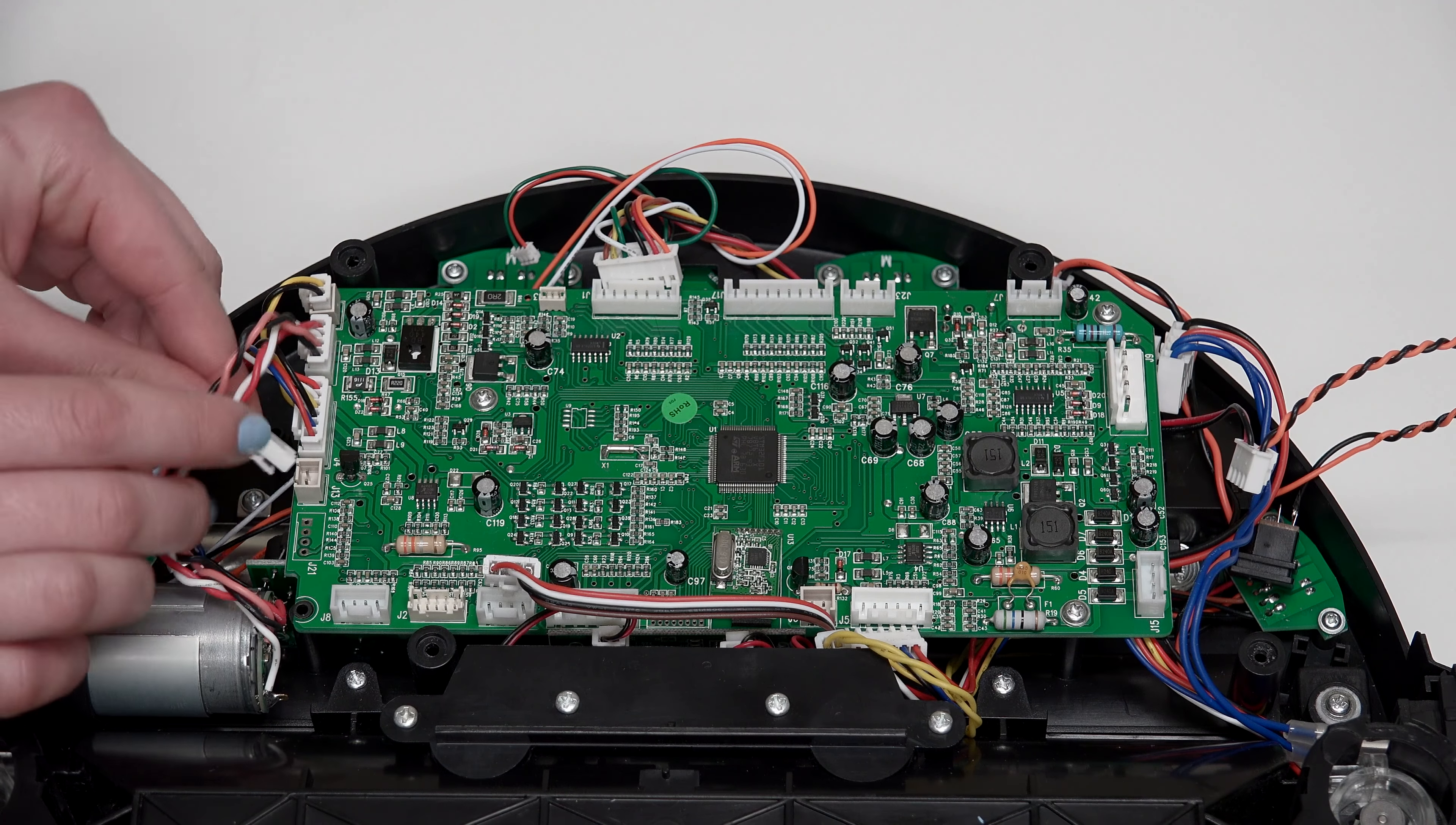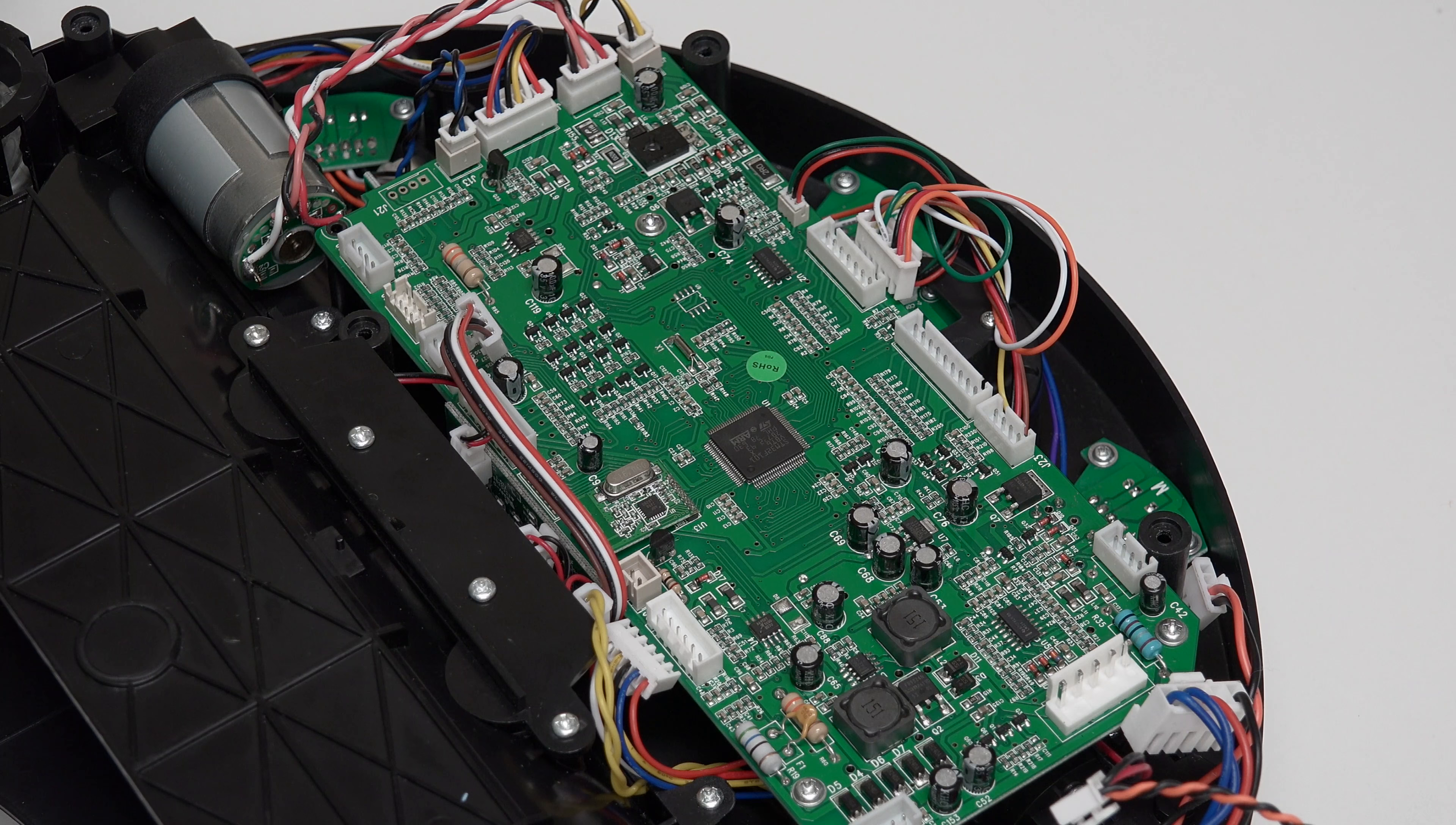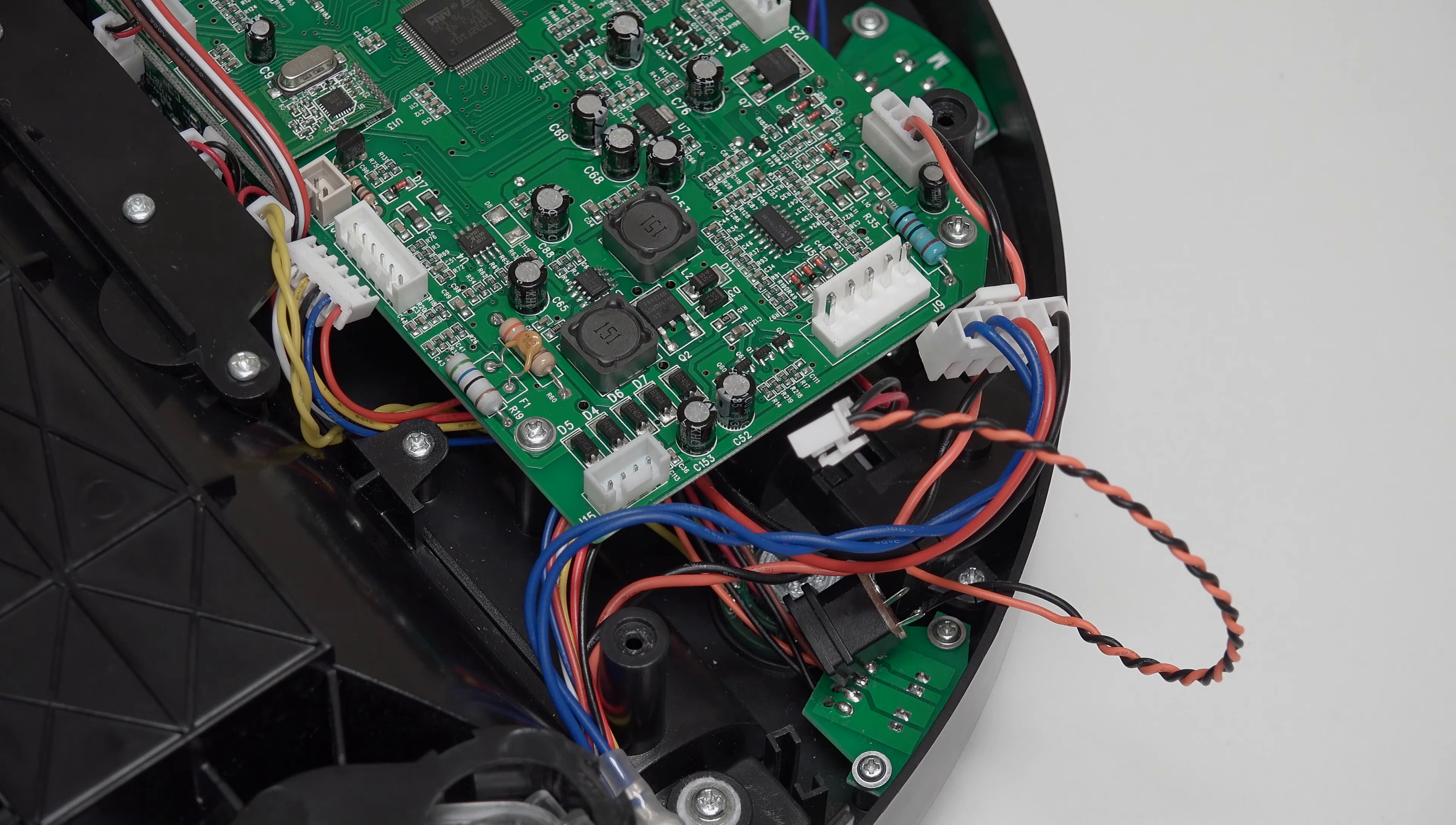The order of plugs at the top of the mainboard, from left to right, is a small plug with red and green wires, a wide plug with multicolored wires, two empty spaces for now, and a small plug with black and orange wires in the top right corner.